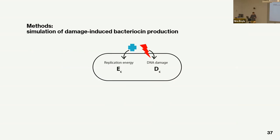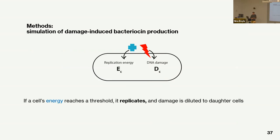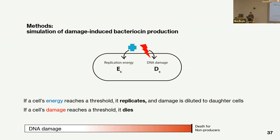Each individual cell has two traits: replication energy building up, and DNA damage accumulating — directly influenced by nutrients and environmental DNA damage. When a cell's energy reaches a threshold it replicates, and DNA damage is diluted to daughter cells. If damage reaches a certain threshold the cell dies. For bacteriocin producers, I put this death threshold lower — they die earlier but when they do, they release bacteriocins.